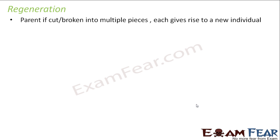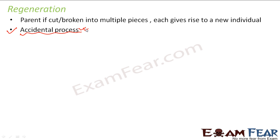Regeneration is said to be an accidental process — the organism doesn't do it on its own, but if accidentally it gets broken or cut into multiple pieces, each of those pieces gives rise to a new organism. The similarity between fragmentation and regeneration is that in both processes the broken pieces form new organisms by cell divisions. The difference is that fragmentation happens when the organism matures and breaks on its own, whereas in regeneration the organism doesn't break on its own.